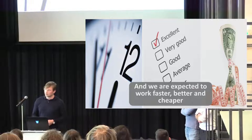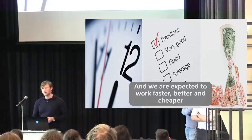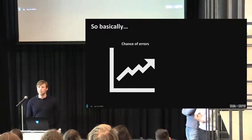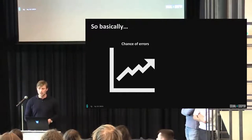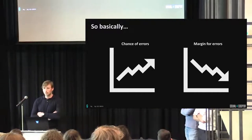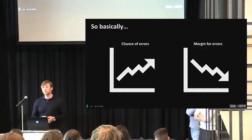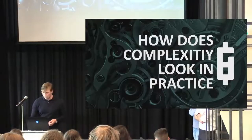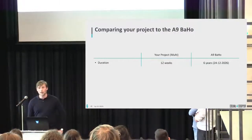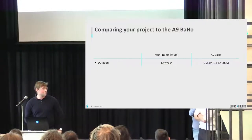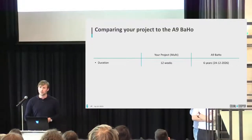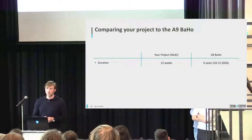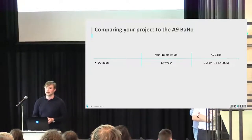What's also happening is that we are expected to work better, faster, and cheaper. And what is the effect of that? We have an increase in the chance of errors because complexity is increasing and our projects are getting larger, but our margin of error is decreasing. We have less room for delays, less room for cost overruns, and that makes everything a lot more difficult. To give you a look at what complexity looks like in practice, we made a small comparison: your student project versus the largest project we have, which is the A9.